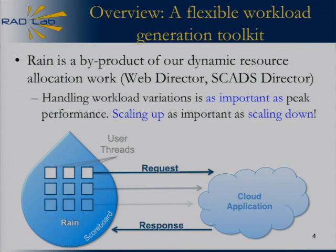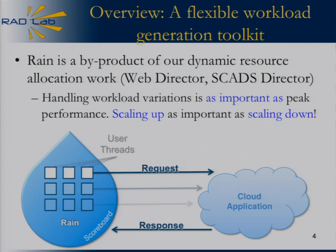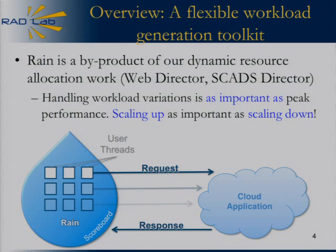RAINN basically came as a result of a lot of the work we were doing on dynamic resource management. We had two projects called the director — the web app director, focused on scaling the stateless web application tier, and the SCAD storage director. To convince ourselves and others that the director actually works, we needed more sophisticated workloads. In the cloud, peak performance is still important, but we also want to show the director can handle variations in workload. The transition between workload regimes is really important.